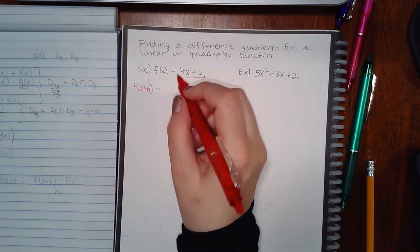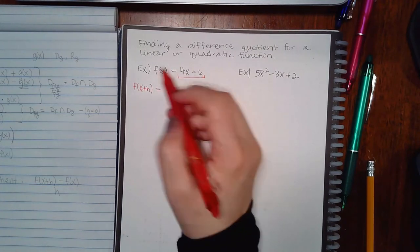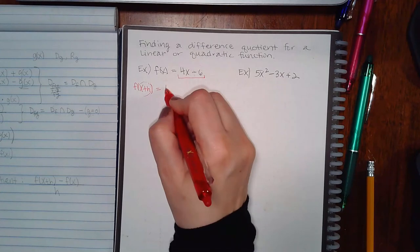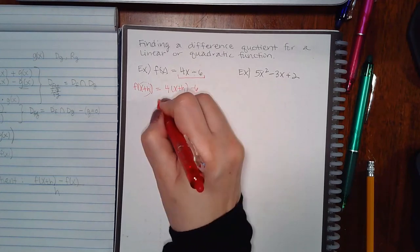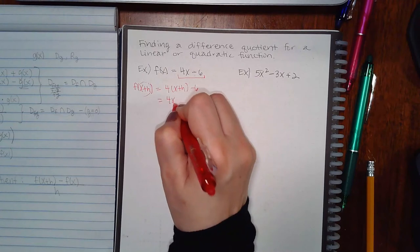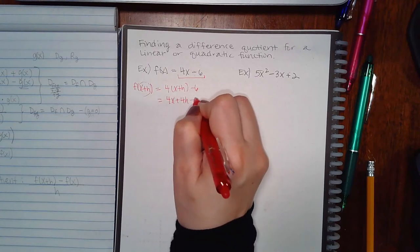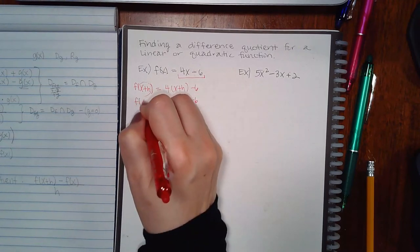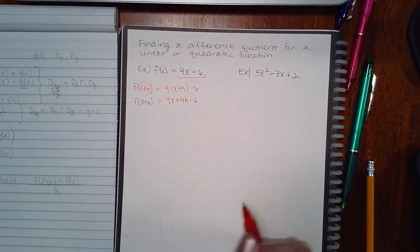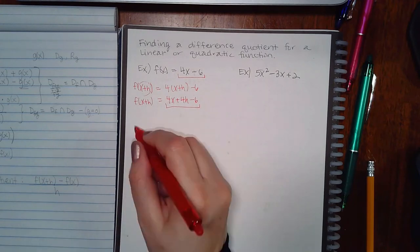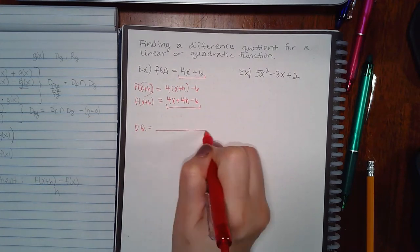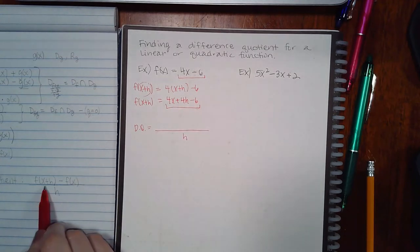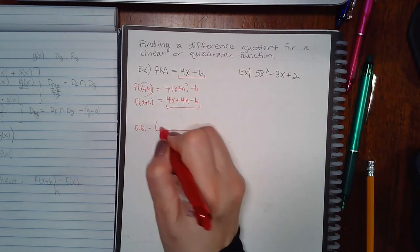So I like to figure out what does that look like before I start plugging things in. And what it means is wherever there was an x in my function, I'm now going to replace it with x plus h. And I can simplify that by distributing the four. And I really can't simplify that any further. But at least now I have an expression for f of x plus h. So if I want to do the difference quotient,